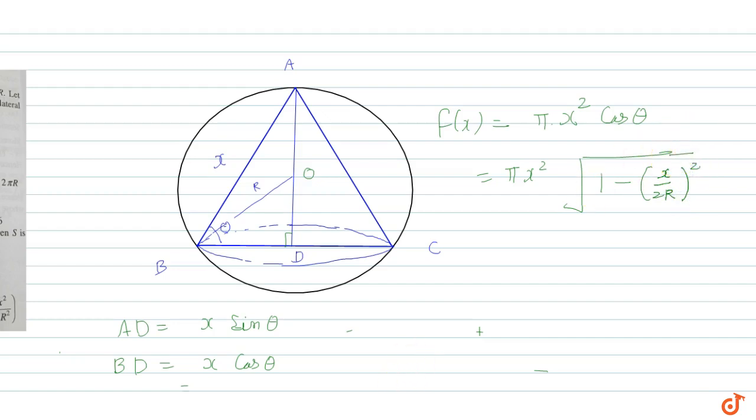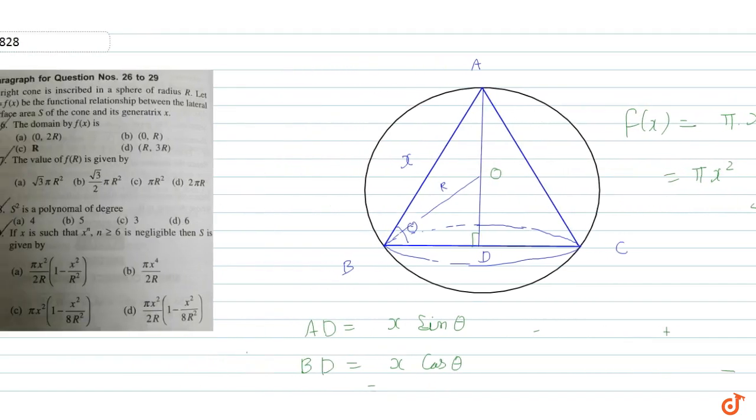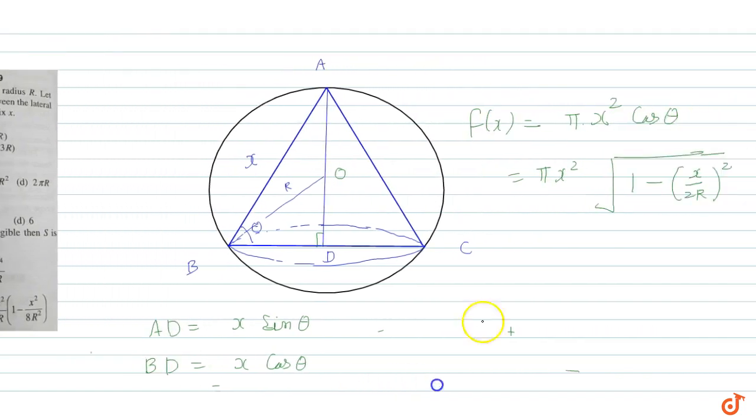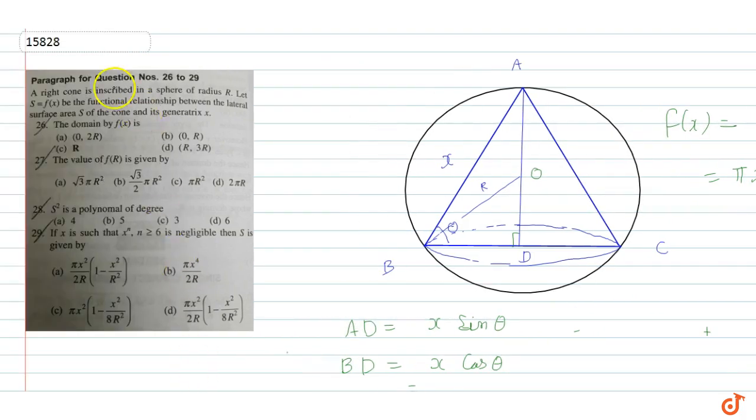Now the first question: what is the domain of f(x)? The value of x can never be more than 2r, so it can be from zero to 2r. Therefore, the answer for the first part is option A.